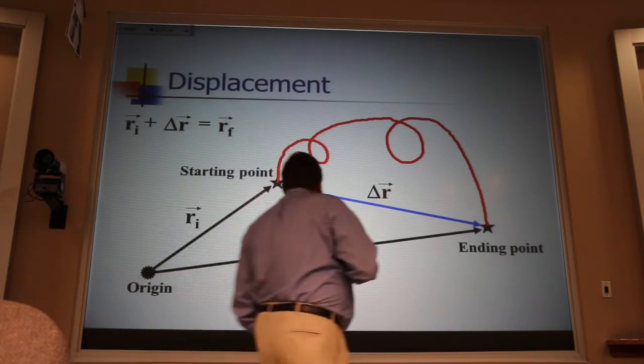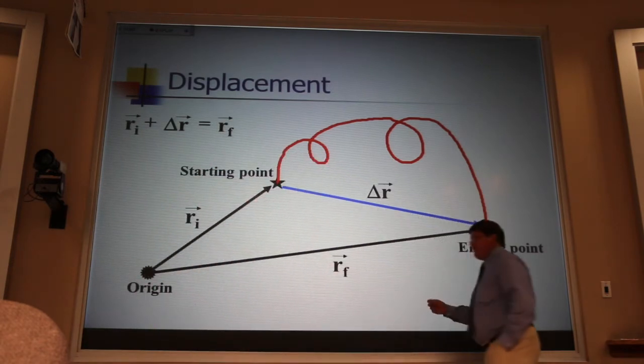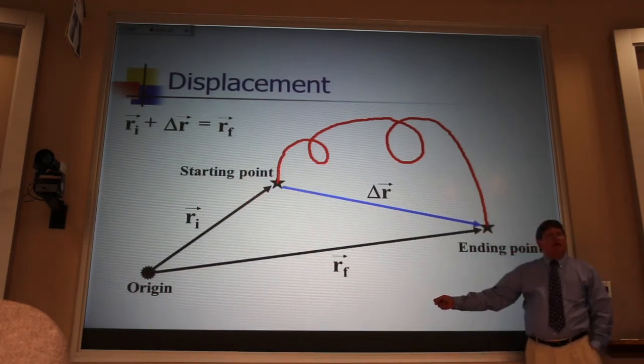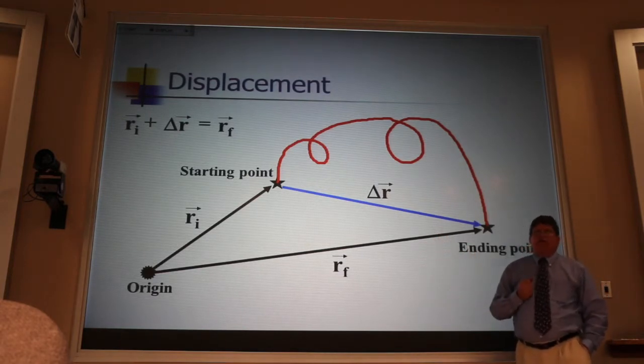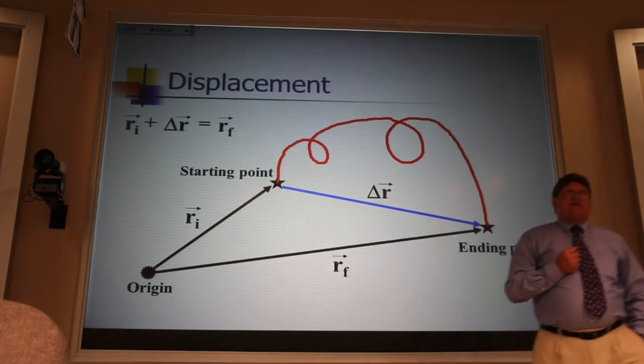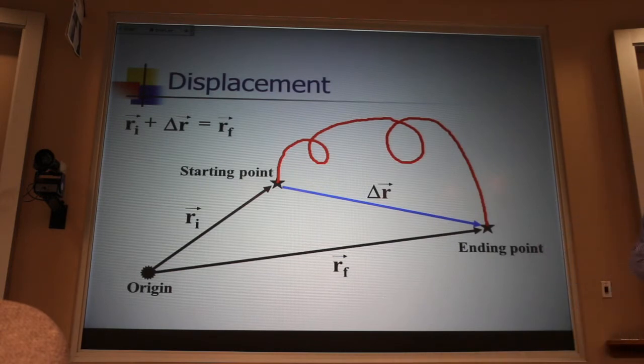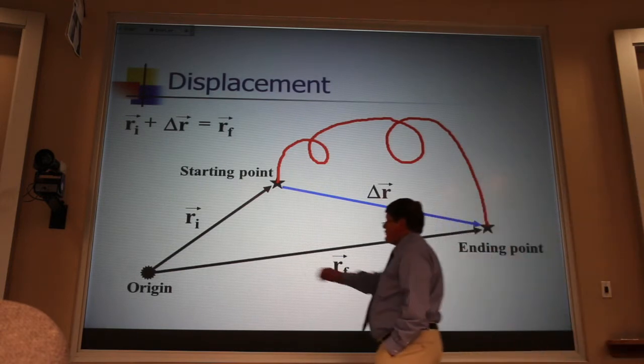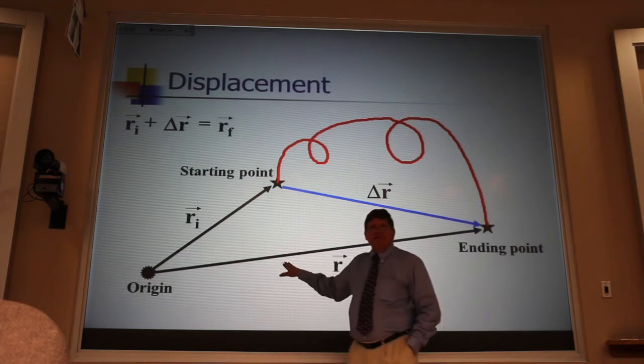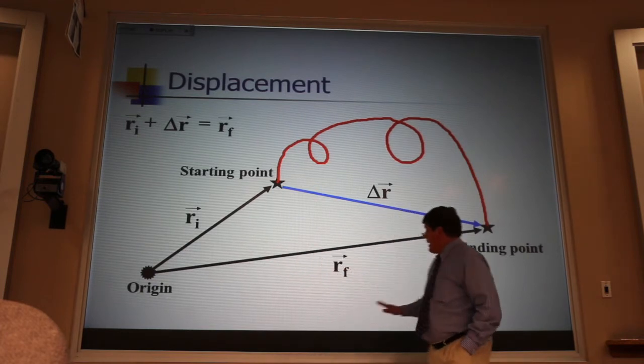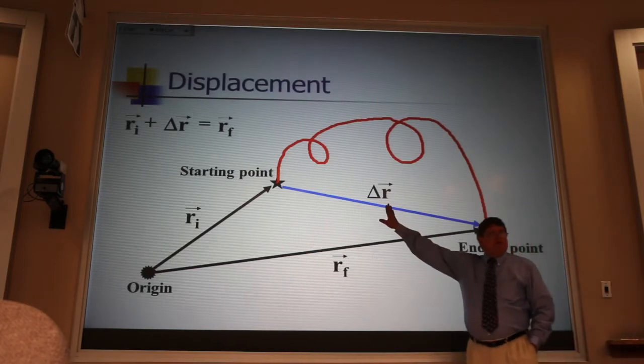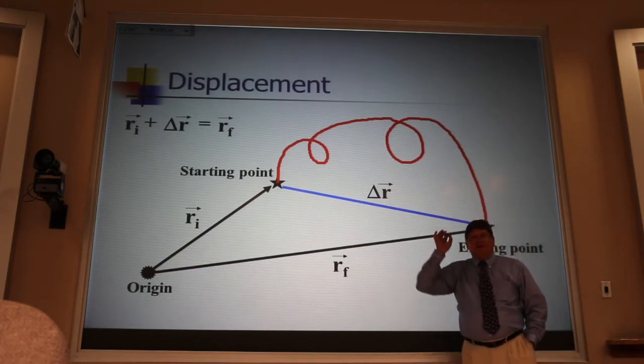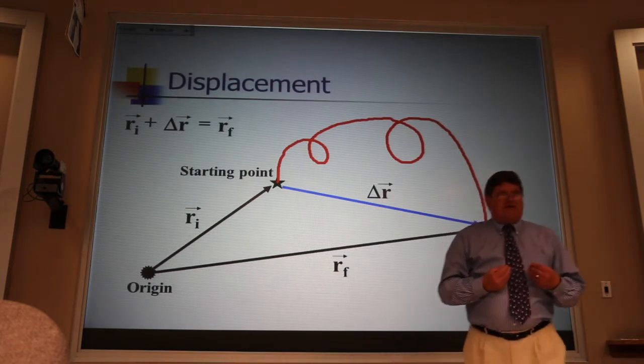The second idea is that if I had chosen my origin over here, some of these vectors would change, some not. What about these position vectors? Would they be different? They would, because now they'd be starting at some origin over here.